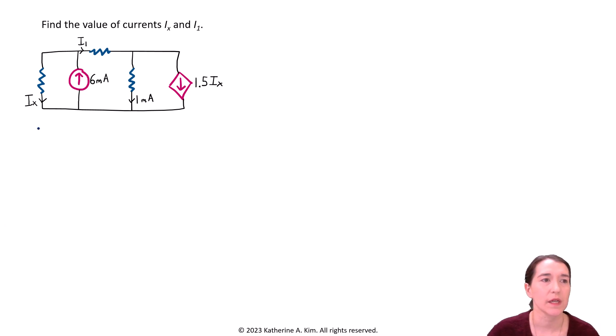So we look at our circuit over here, and we see Ix is on the leftmost branch going downward, and I1 is going from left to right over the top resistor. So we want to find those two currents.